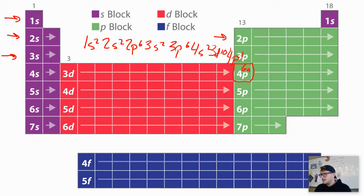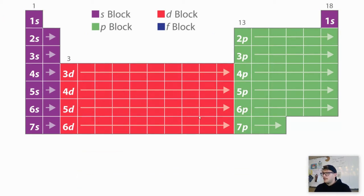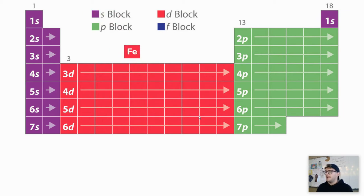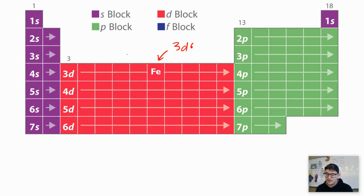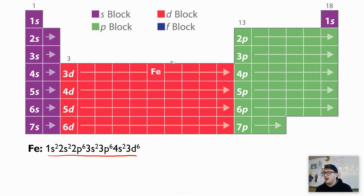Now let's learn the shorthand method. Let's take a look at iron. Instead of writing the whole electron configuration — because it can get pretty long — we want to abbreviate it. If we were to write iron's configuration normally, we know that iron ends on 3d6 and everything that comes before it is included. So the full electron configuration for iron is that long form. That is the longhand electron configuration for iron.